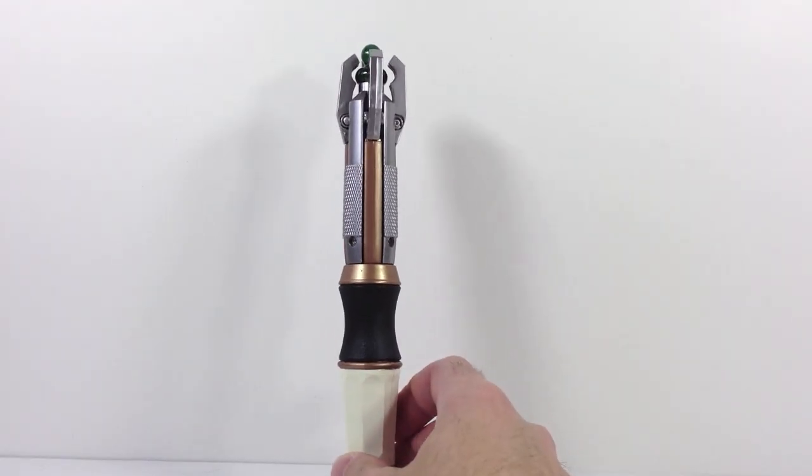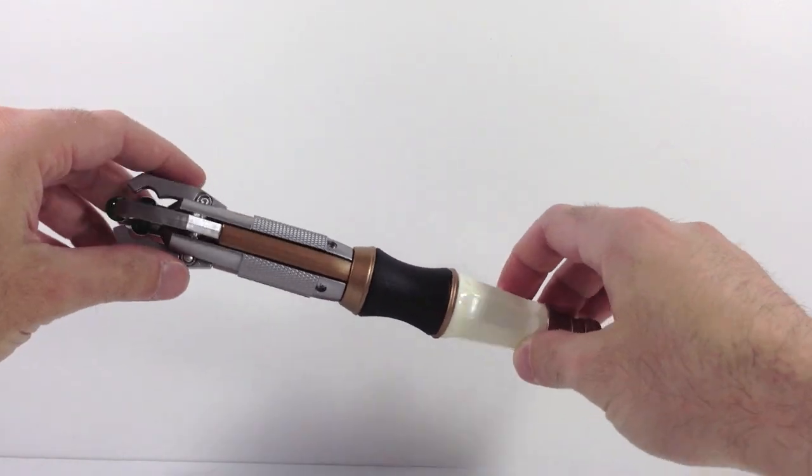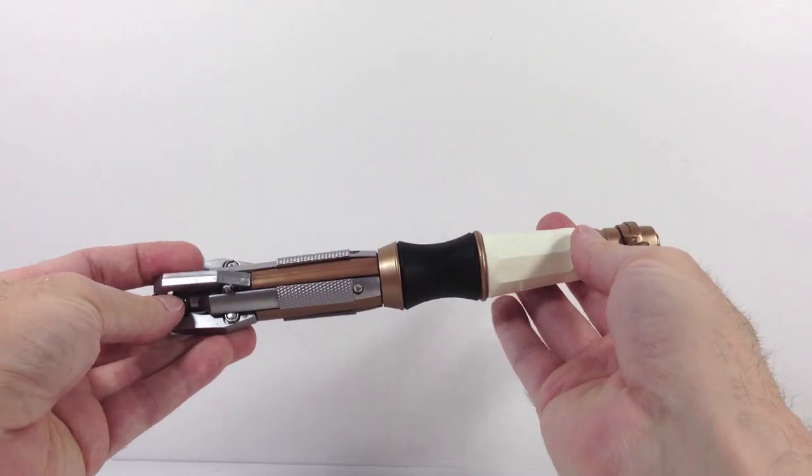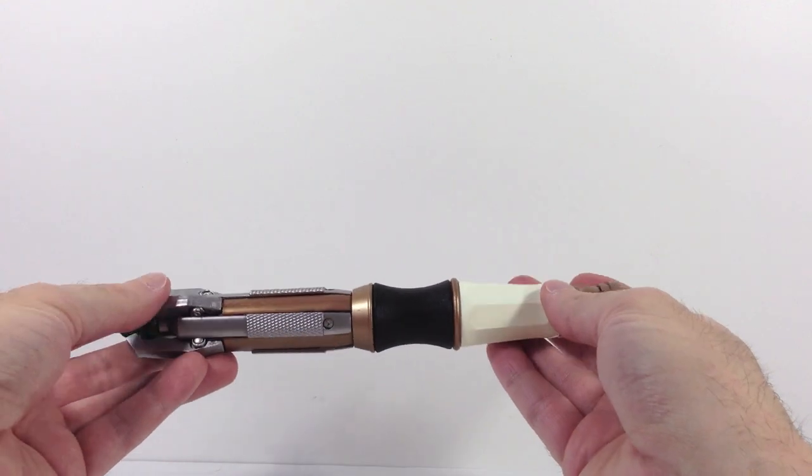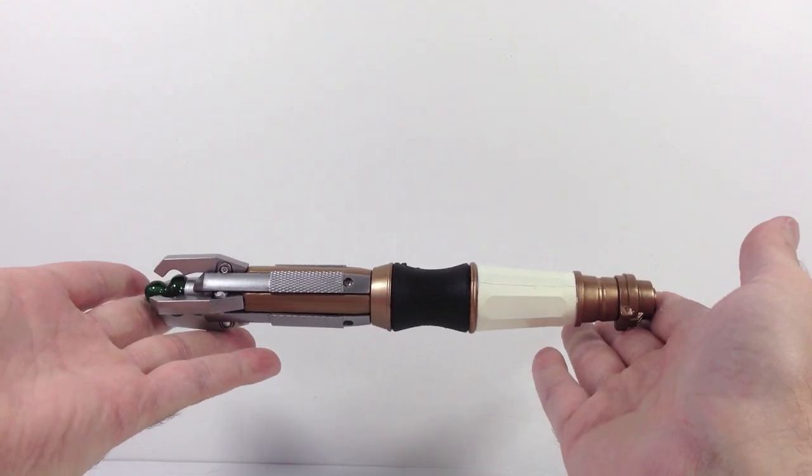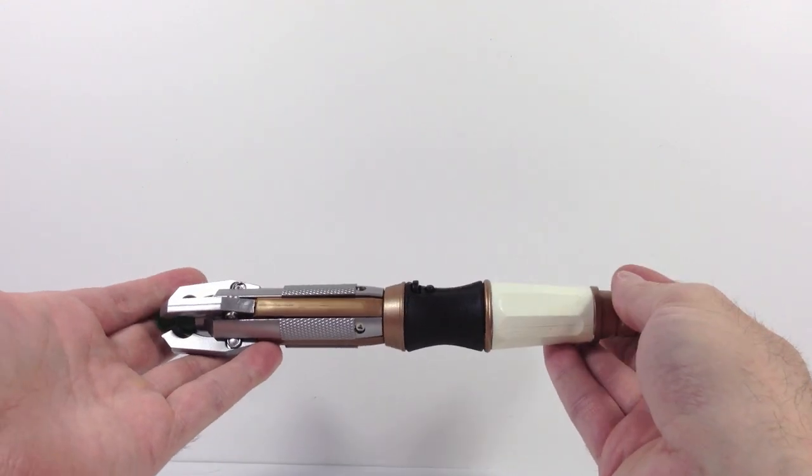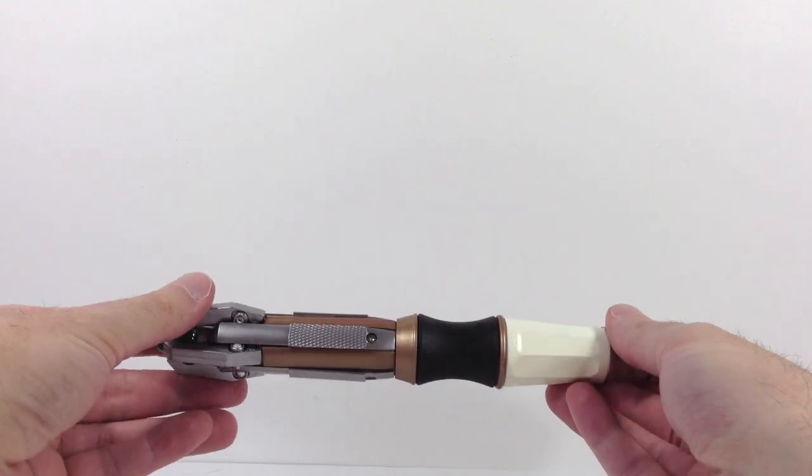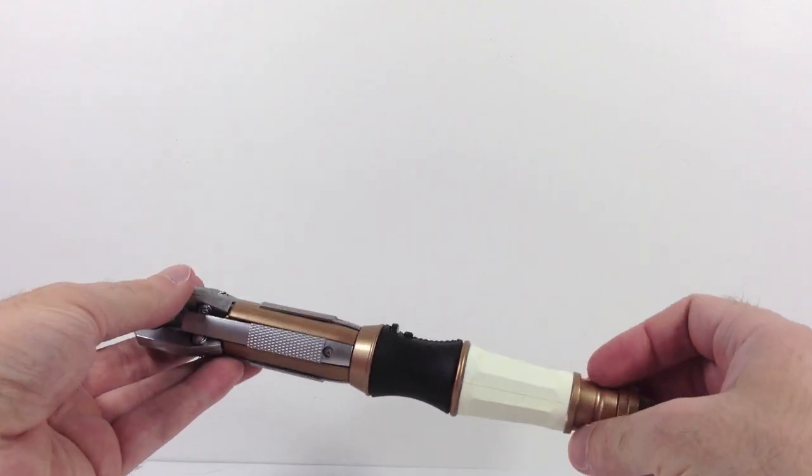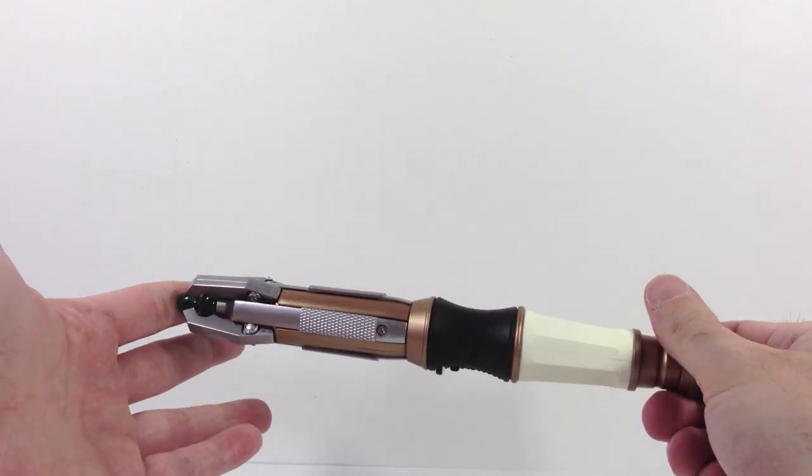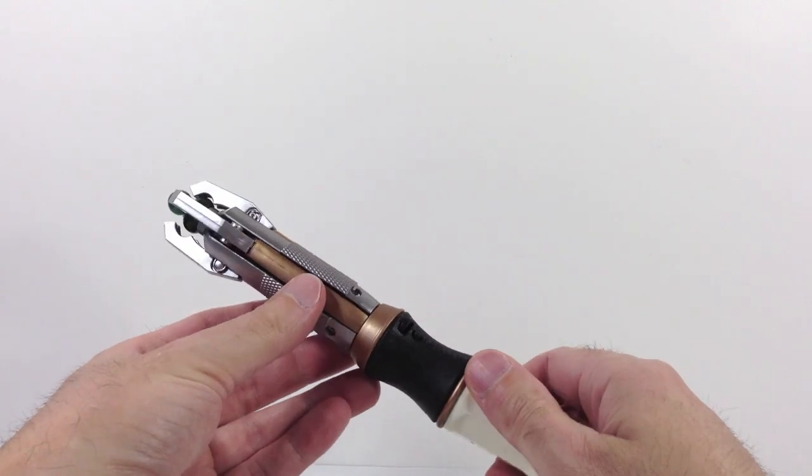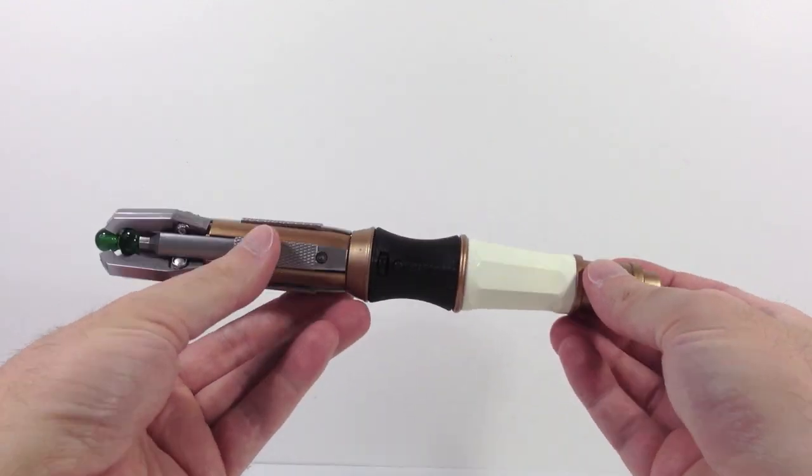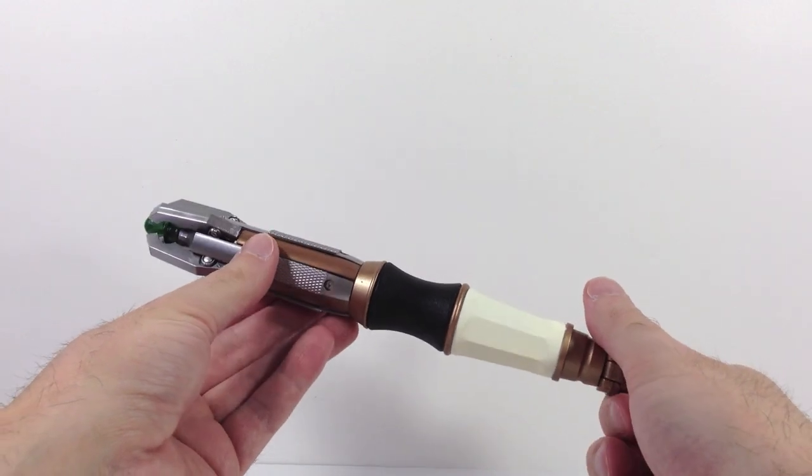So here is the 11th Doctor screwdriver. And these things have varied over the years. Each Doctor kind of reinvents his sonic screwdriver. You could sort of compare that maybe to a lightsaber where each of the Jedi and Sith construct their own lightsabers. Well, each Doctor constructs his own sonic screwdriver. This happens to be the actor Matt Smith. He's the 11th Doctor's sonic screwdriver. And there's quite a bit of detail on this.